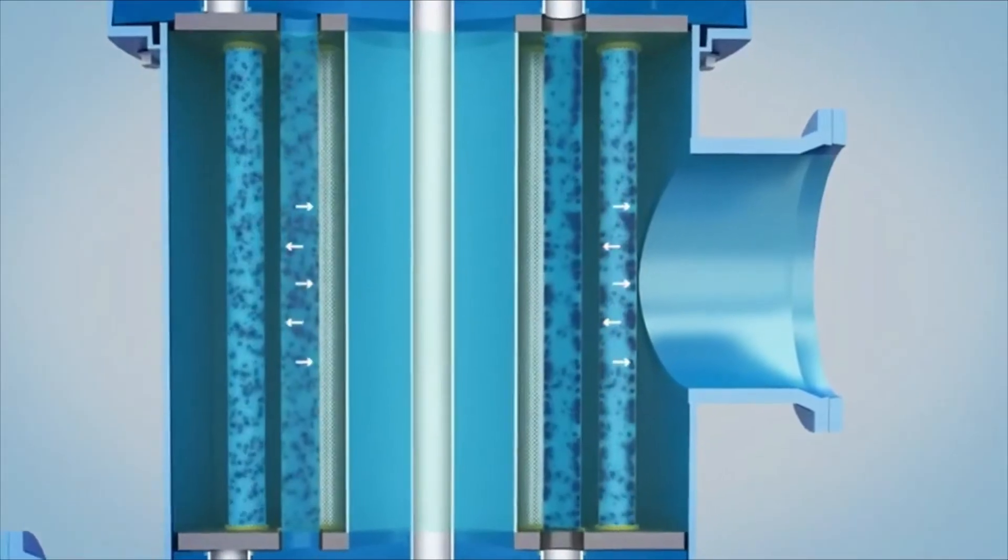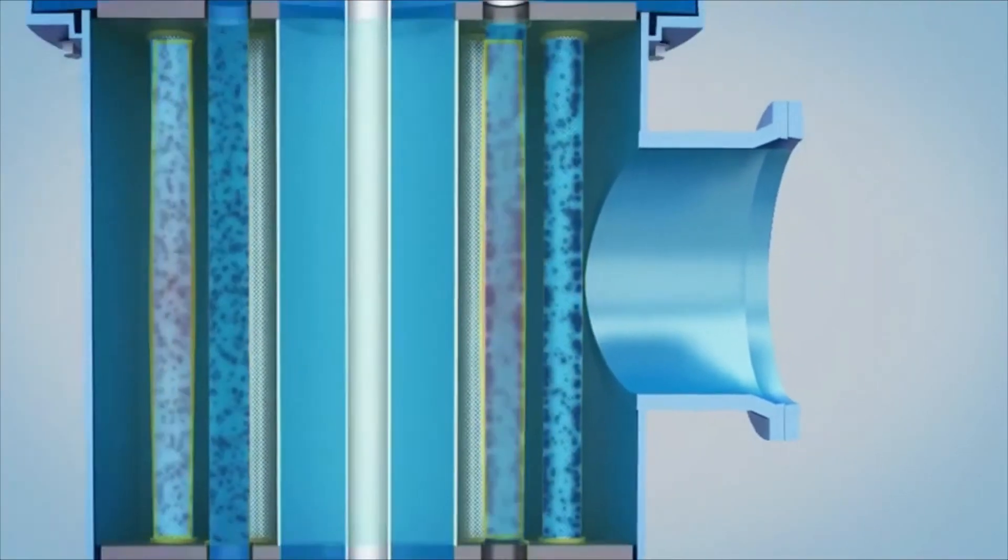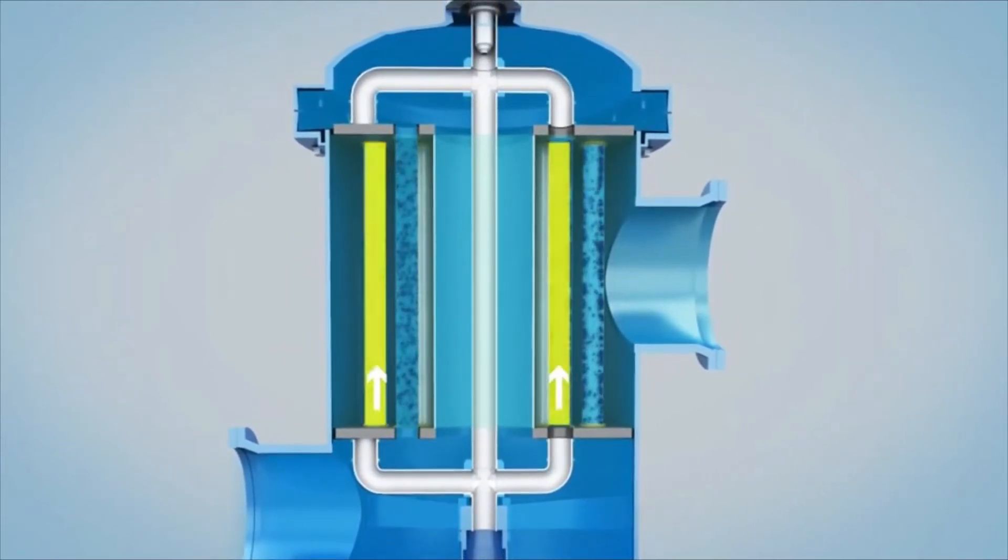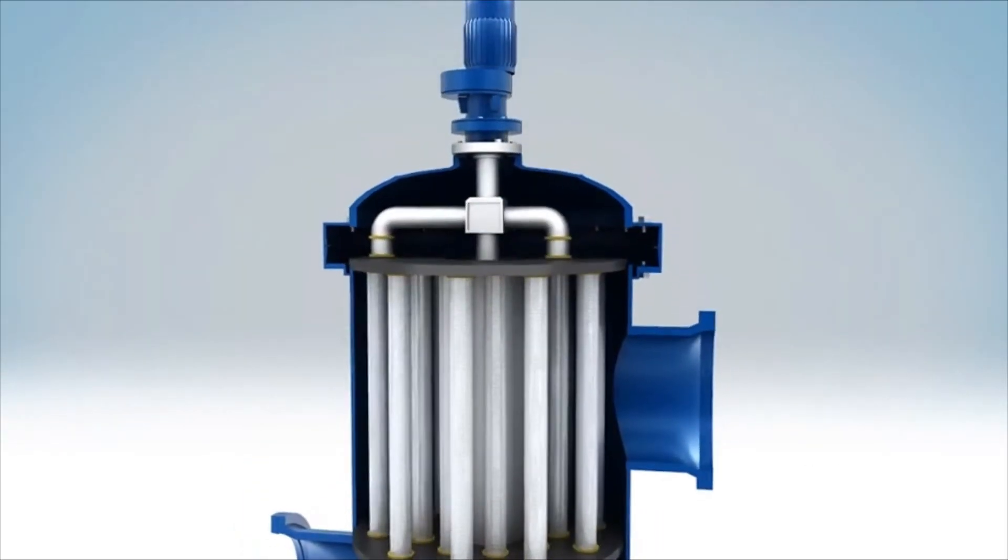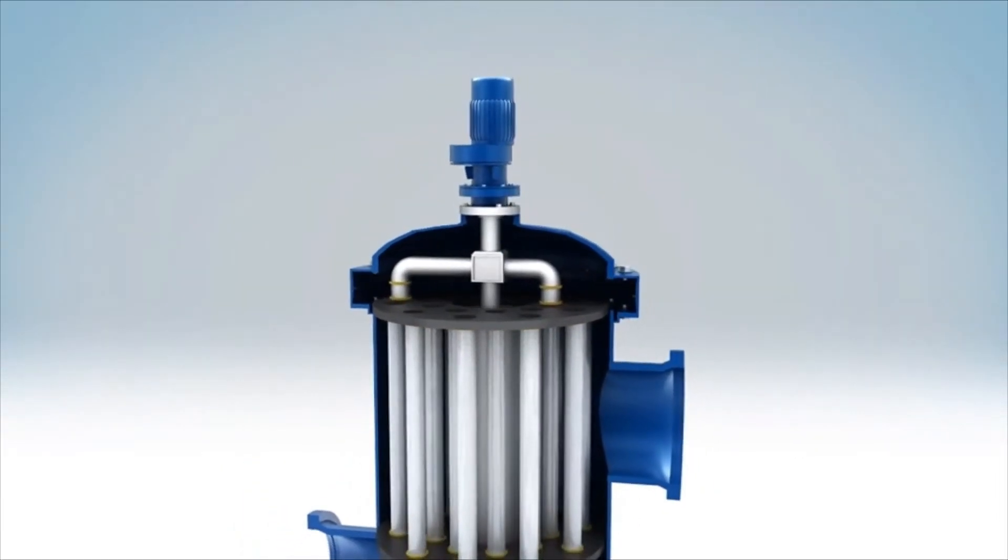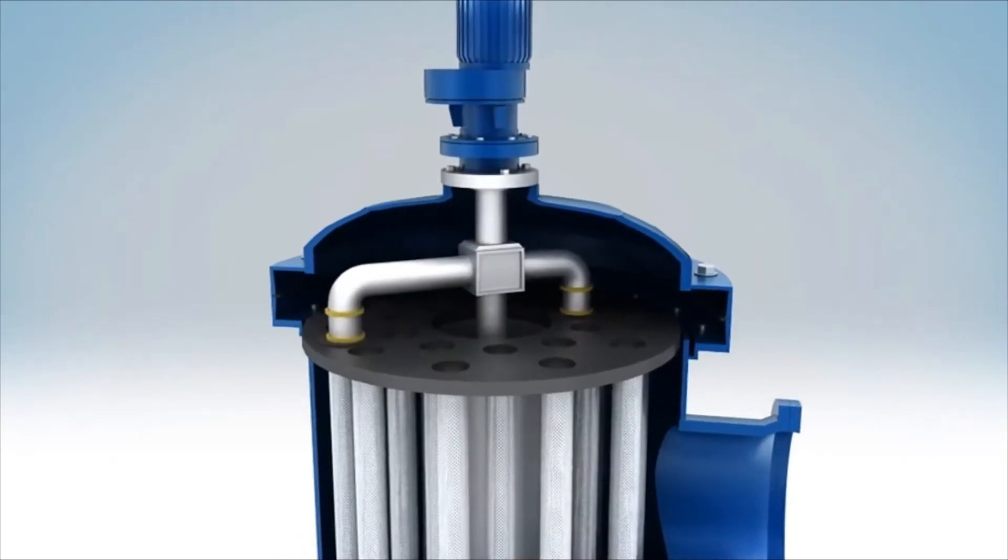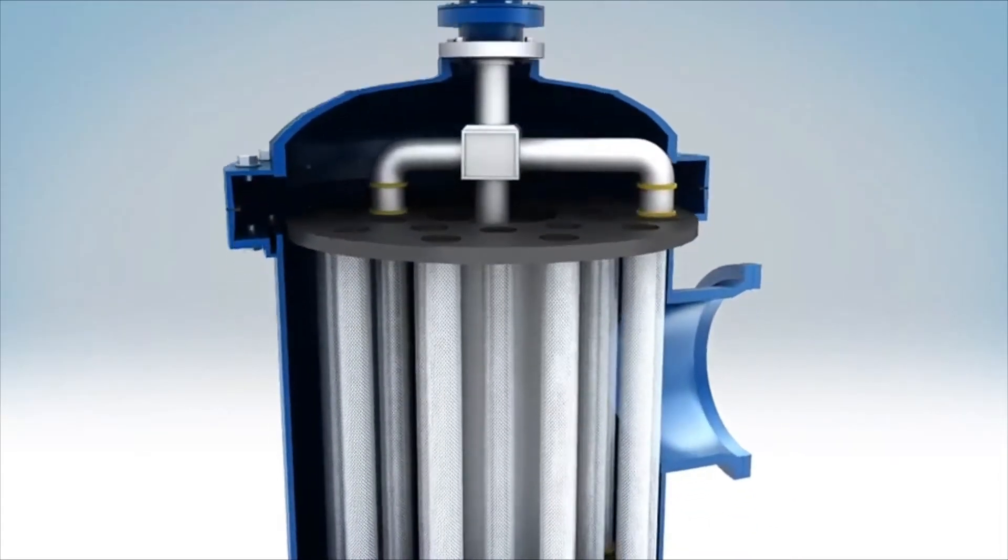When the pressure drop between the internal and external of the filter mesh rises to a set value, the filter operates back flushing process automatically. The filter meshes, which are open at both ends, will be alternately flushed in sequence from above and below. This action doesn't interrupt the normal operation. The flushing arm on the top of the filter rotates by gear motor and covers the upper opening of the filter mesh.